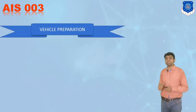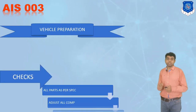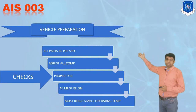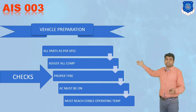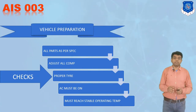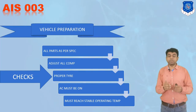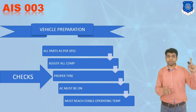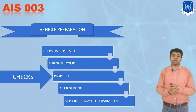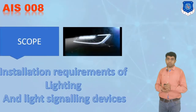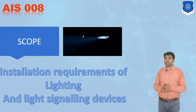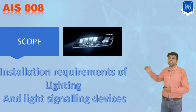The checks to be followed when testing as per AIS 003 are: the vehicle must be prepared such that all parts are as per specification, all components must be adjusted as per the given norms, there should be a proper tire, AC must be kept on so the vehicle is under a certain load condition, and the vehicle must reach a stable operating temperature before being allowed to travel on a grade.